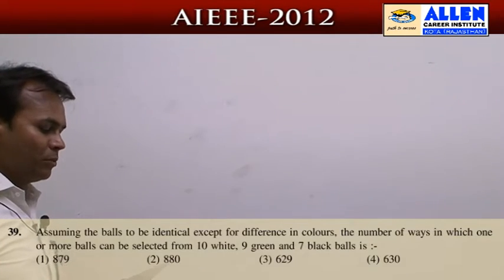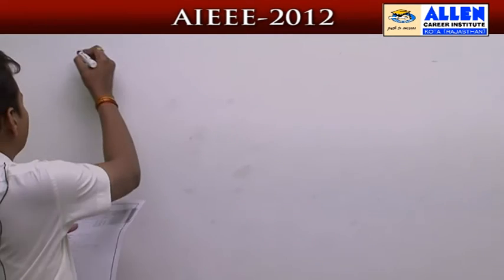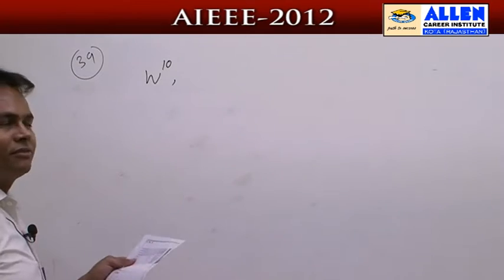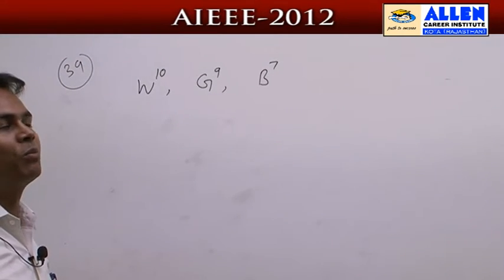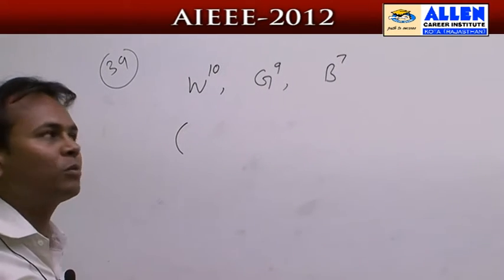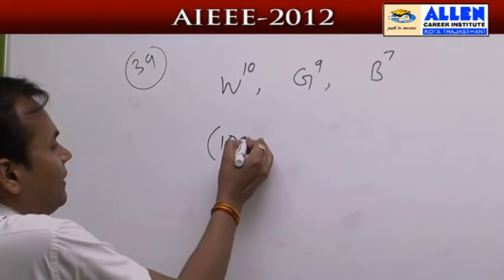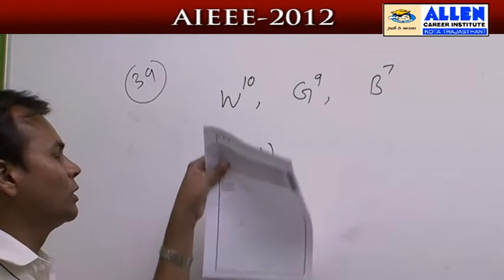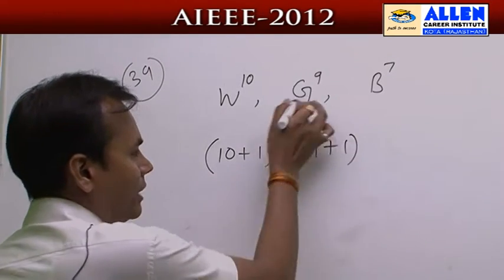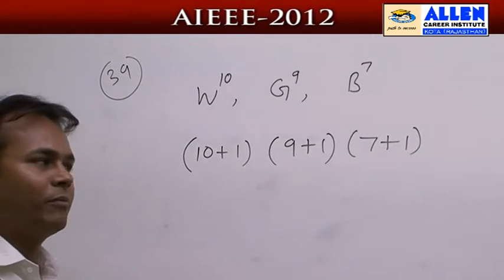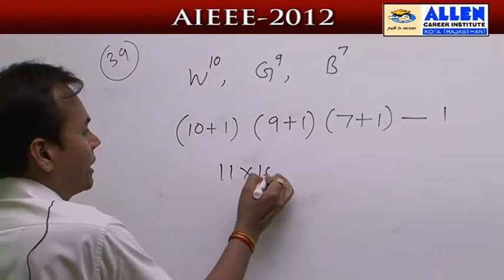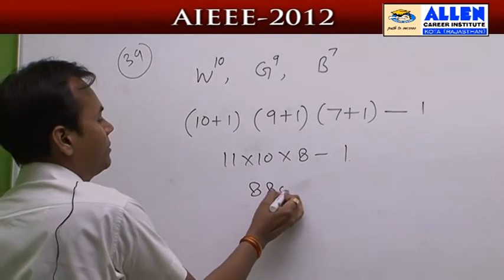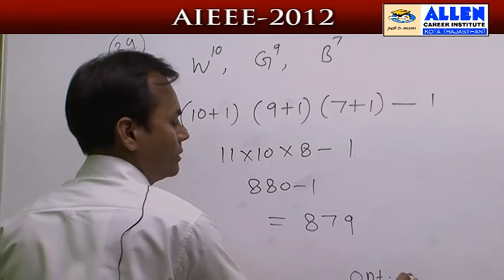Question 39: Assuming bowls are identical except for colour, find the number of ways to select one or more bowls from 10 white, 9 green, and 7 black bowls. The number of selections for white bowls is 10 + 1 = 11 (including selecting none), for green is 9 + 1 = 10, and for black is 7 + 1 = 8. Since at least one must be selected, we subtract 1 for the case where all are rejected: 11 × 10 × 8 − 1 = 880 − 1 = 879. Option 1 is correct.